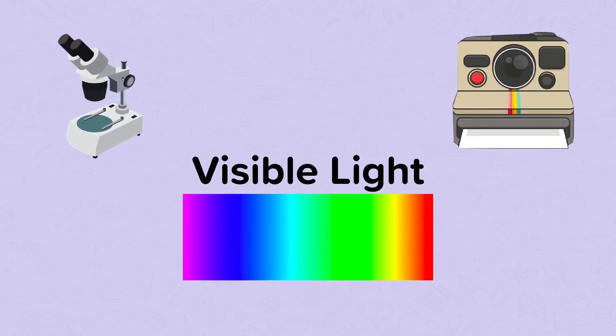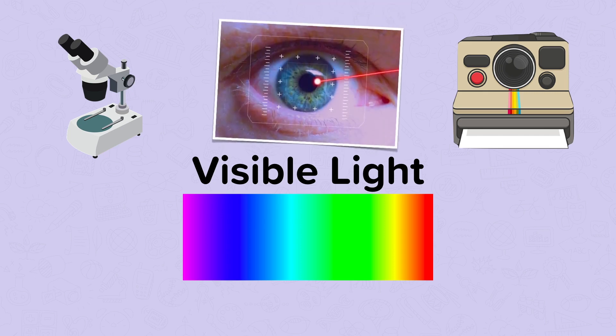Next we have visible light, with a visible spectrum made up of seven colours: violet, indigo, blue, green, yellow, orange, and red. Visible light is used for seeing and imaging, such as taking photos or using a microscope. At high intensity it's also used for cutting and printing. Visible light is only dangerous at very high intensities, such as lasers, which can cause blindness and burns. Because lasers can cause permanent damage or permanently change the shape of the cornea, we use them to perform laser eye surgery.